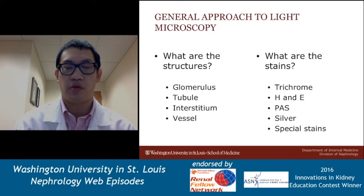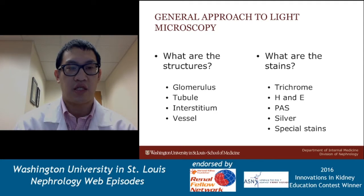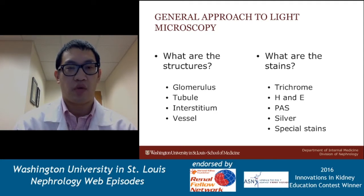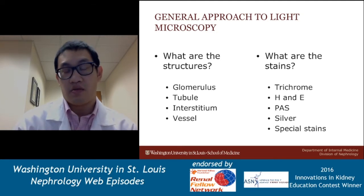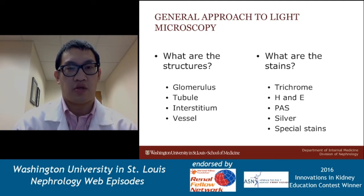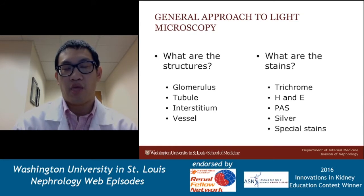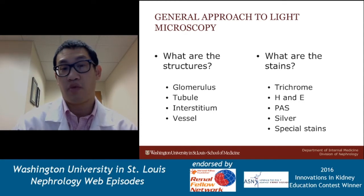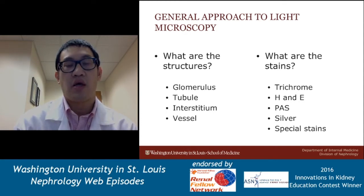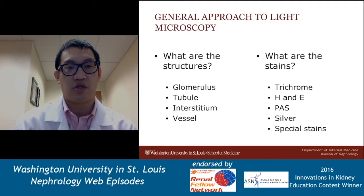If it's glomerular, we look for blood and protein in the urine. If it's tubular, we sometimes can find granular casts, which suggest ATN. If it's interstitial, sometimes we can see white blood cells or white blood cell casts. Vascular disease is a tricky one — it really doesn't show anything. And when we don't know what is going on, or we can't find out by examining the urine sediment, or if we want to confirm the diagnosis, we do the kidney biopsy. When you do the kidney biopsy, you want to evaluate each of these structures independently.